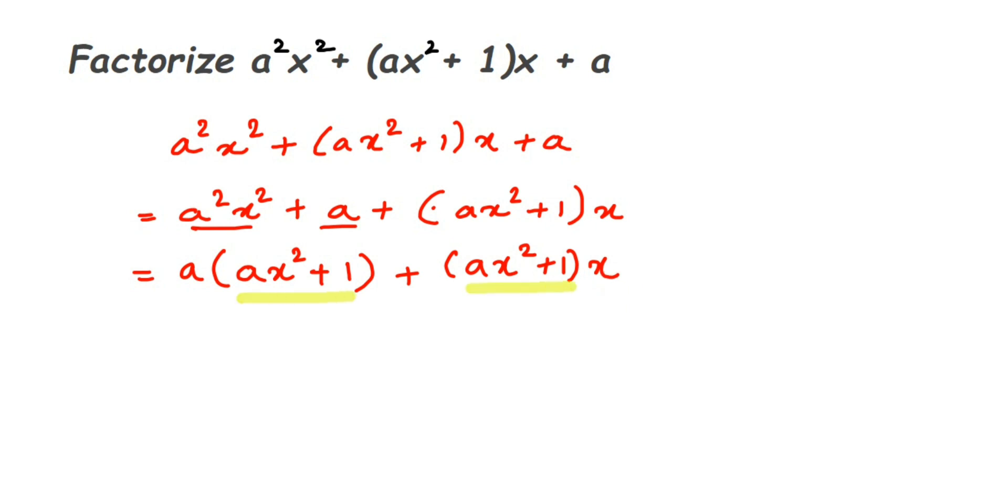So this will be equal to (ax² + 1) - if I take that out, from here a is left and from here x is left with a plus sign - so (ax² + 1)(a + x).